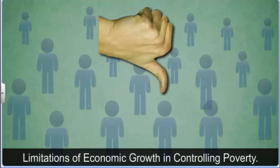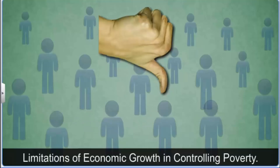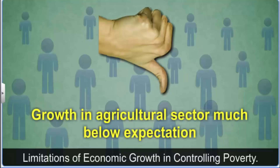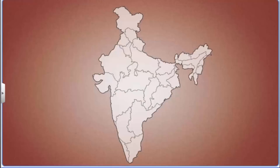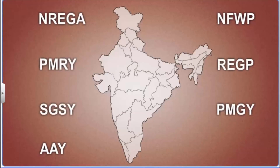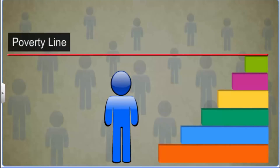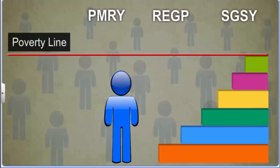However, economic growth plays only a limited role in the reduction of poverty, because the benefits of economic growth do not reach the poor directly. As a result, growth in the agricultural sector, which employs the largest number of people in India, has been much below expectation. The government of India has launched several anti-poverty programs for specific groups. A lasting solution to poverty is to enable the poor to become self-reliant, which is why several government schemes like the Prime Minister Rozgar Yojana, Rural Employment Guarantee Program and Swarna Jayanti Gram Swarozgar Yojana are aimed at generating self-employment opportunities in rural areas.